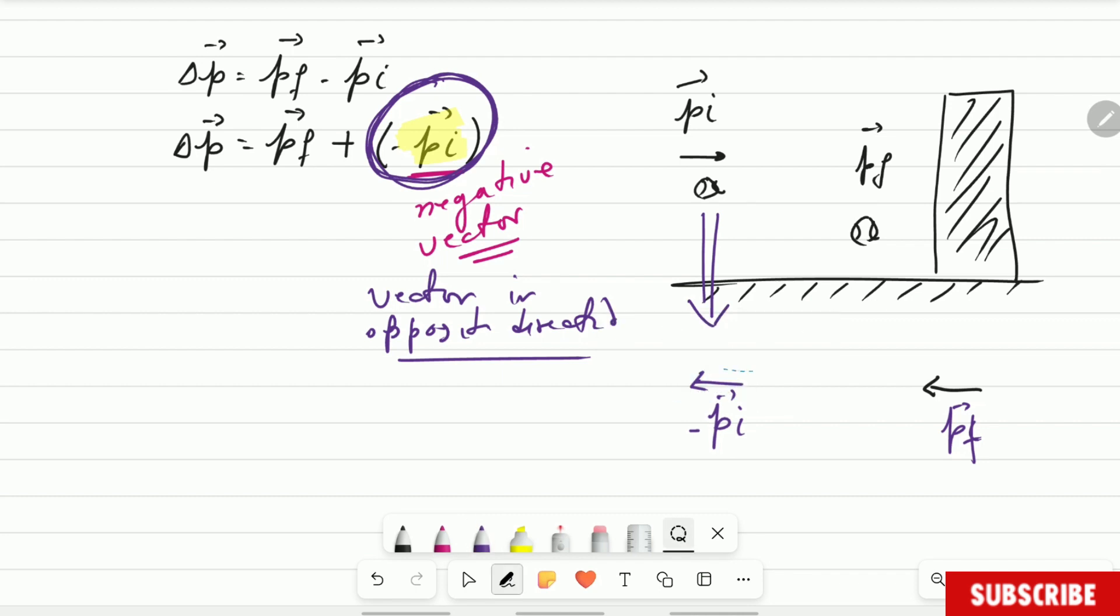I'm going to add it there. Right on the head of the first vector, I place the tail of the second vector. Do you understand? So this one here, that is the minus initial. Where is the change in momentum? A vector that is going from the tail of the first one to the head of the last one. So this one here is the change in momentum. This is the graphical representation we were talking about. Is that understood? Is it very difficult? No.